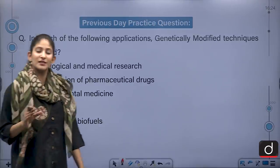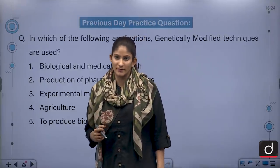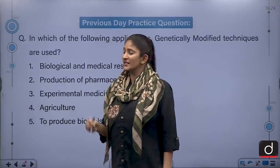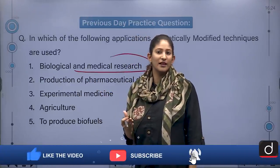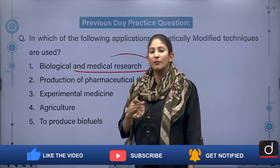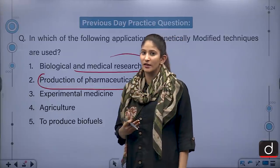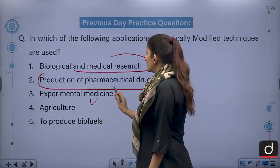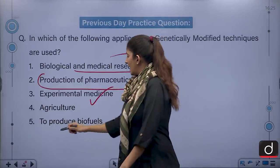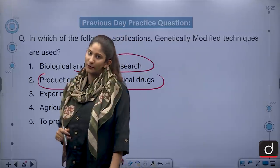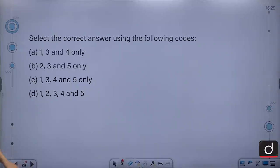Genetically modified technology is used to modify the DNA of an organism. It is very important for biological and medical research. Production of pharmaceutical drugs is of course under the ambit of it, as is experimental medicine, and also agriculture — as we know about Bt cotton — and to produce biofuels. So all are correct. The correct answer is D: 1, 2, 3, 4 and 5.